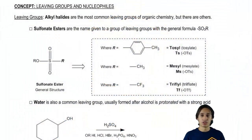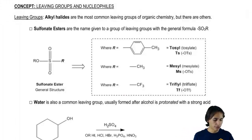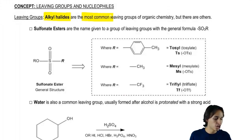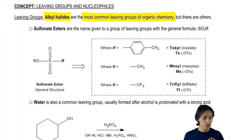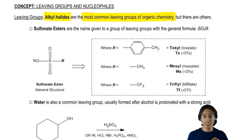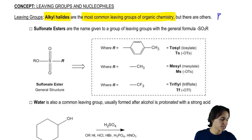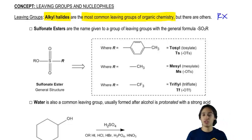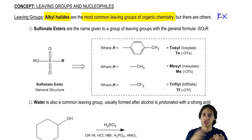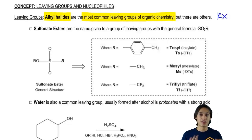Let's get started with leaving groups first. As I said before, alkyl halides are the most common leaving groups in organic chemistry. About 90% of the time you're just going to see alkyl halides, and that's why we've been dealing with them so much — they're literally ubiquitous. They're everywhere.